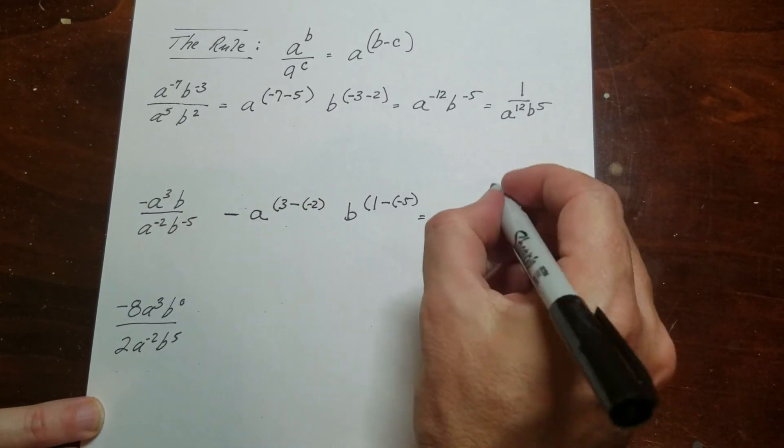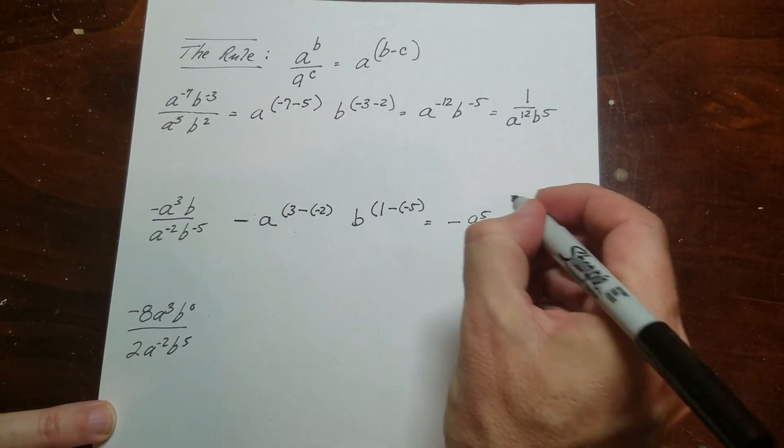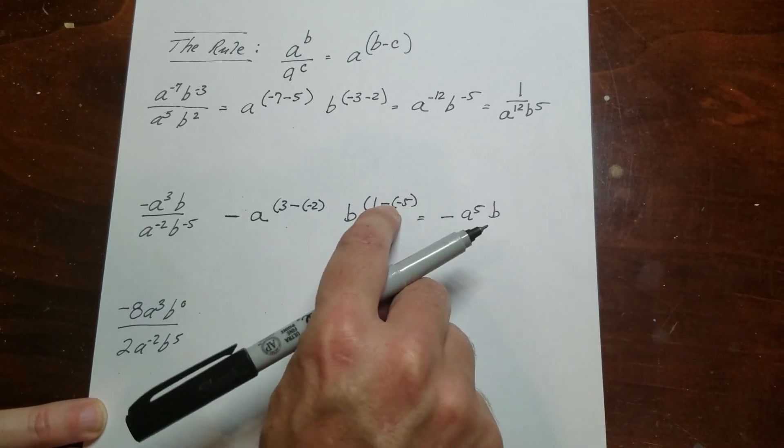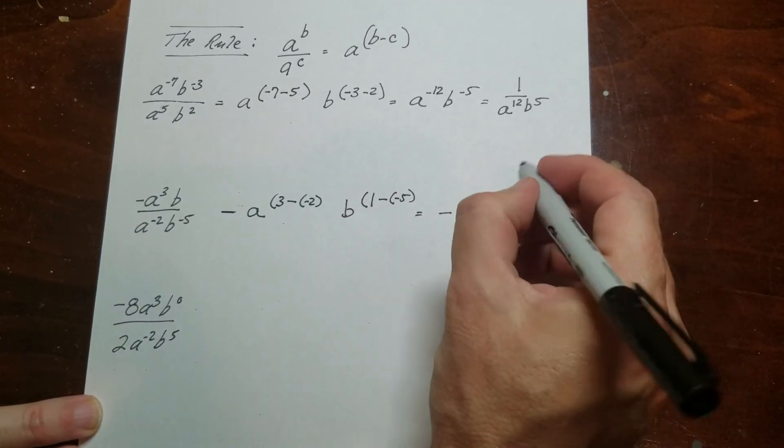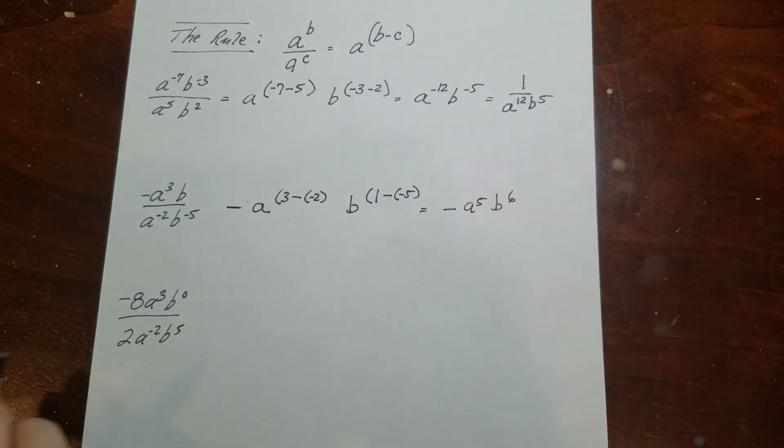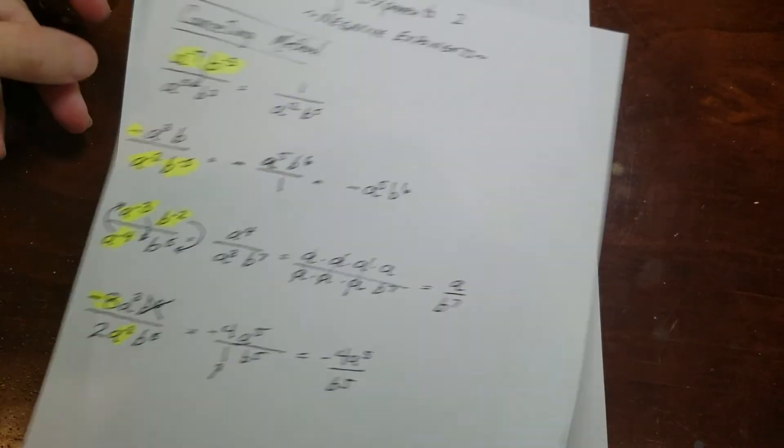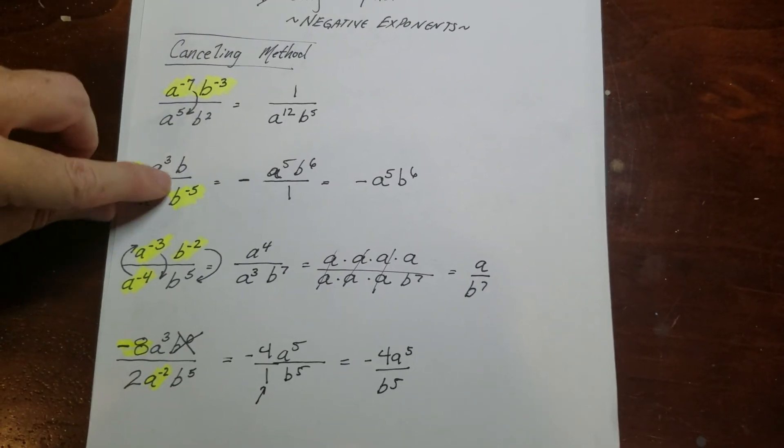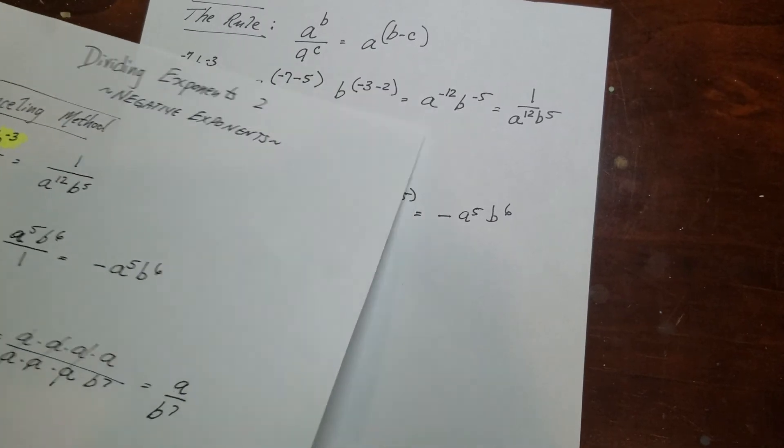And b to the negative negative, that's a positive 5, to the 6th. And again, you can get the same answer doing it the other way. It doesn't make any difference at all.